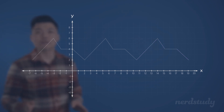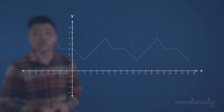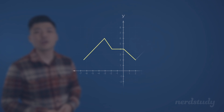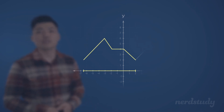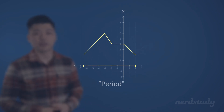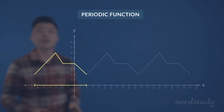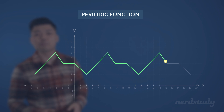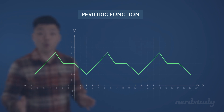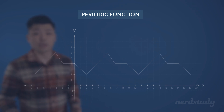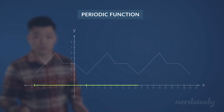Regardless of what kind of variation there might exist on the y-values in order to create this particular pattern, we can also notice that there is a specific horizontal length to a cycle on this x-axis. This distance is called a period. More specifically, a periodic function is defined as a function that has a pattern of y-values that repeats at regular intervals, or we can say that a periodic function has a cycle that repeats constantly at a regular period.